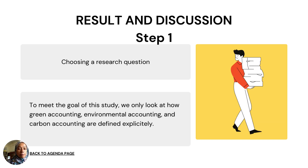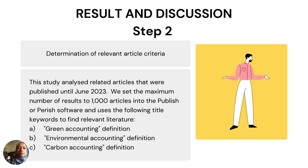In step one, choosing a research question, to meet the goal of the study we only look at how green accounting, environmental accounting, and carbon accounting are defined explicitly. In step two, the determination of relevant article criteria, the study only analyzed related articles that were published until June 2023.